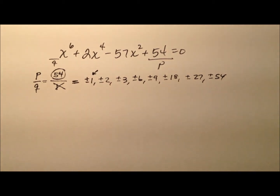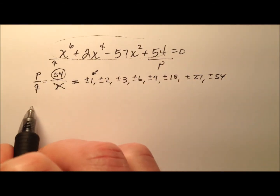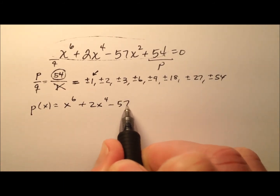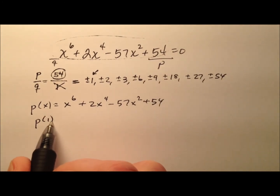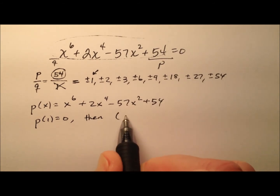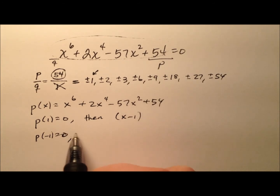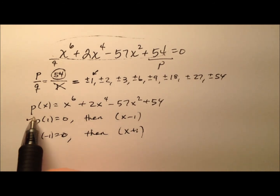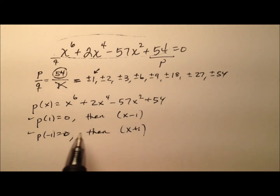I would say positive and negative 1 are the best place to start. So if we have P(x) equal to this x to the 6th plus 2x to the 4th minus 57x squared plus 54, if P(1) equals 0 then x minus 1 is a factor. If P(negative 1) is 0, then x plus 1 is a factor. So I'm going to check these two first, and if we find one that works, we can use synthetic division immediately and hopefully see something nice.